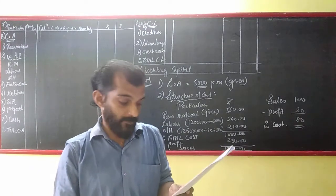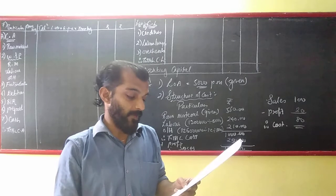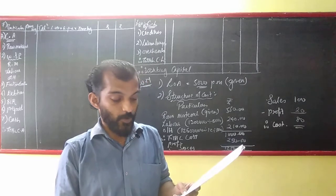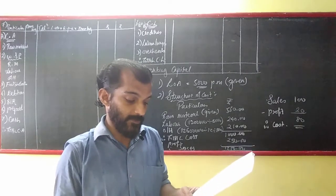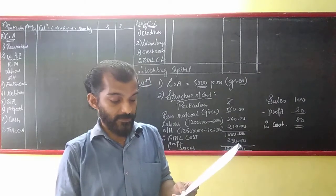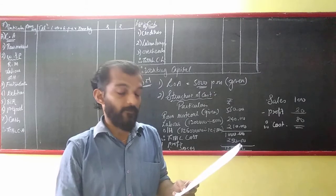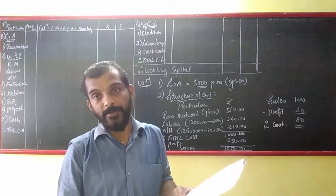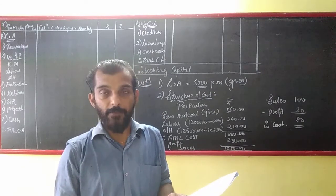Payment of wages is 1 month. Then 20% of material is purchased on cash basis, and suppliers of 80% material give 1.5 months credit — that is, creditors have a credit period of 1.5 months.